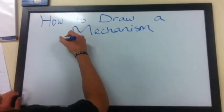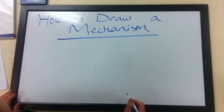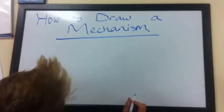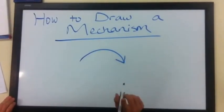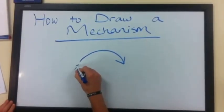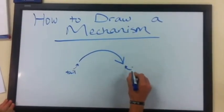In this video we will learn how to draw a chemical reaction mechanism. The first thing we need to know is that we use curved arrows when drawing a mechanism. There are two parts to the arrow: the tail and the head.